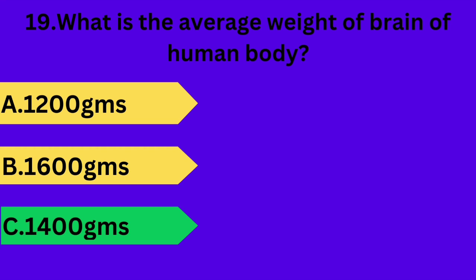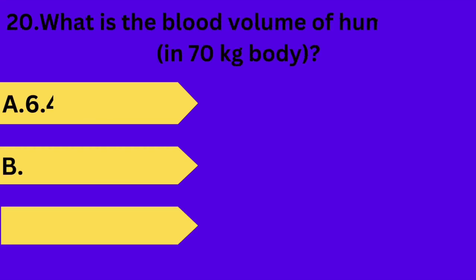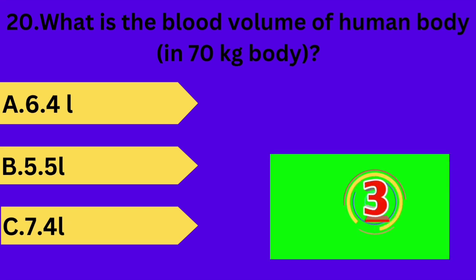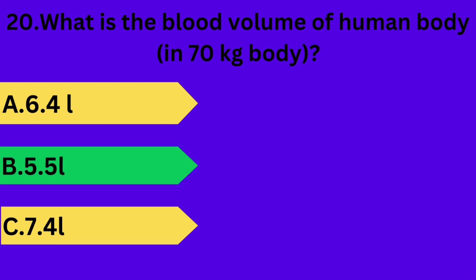And next question is: what is the blood volume of the human body in a 70 kg body? Option A: 6.4 liters. Option B: 5.5 liters. Option C: 7.4 liters. Your time starts now. Answer is option B: 5.5 liters.